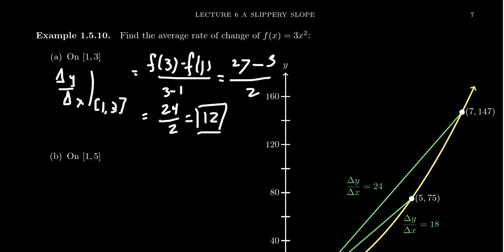So 12 is the average rate of change of the function from 1 to 3. So on average, you're going to increase 12 units along the y scale every time you increase the x by 1. If the function were a line, its slope would be 12.